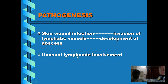The organism possesses a cytotoxic surface lipid coat that facilitates intracellular survival and abscess formation, and it produces a phospholipase exotoxin that increases vascular permeability and has an inhibitory effect on phagocytes. This summarizes the pathogenesis of ulcerative lymphangitis.